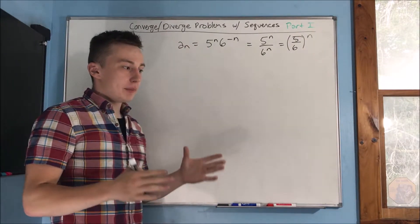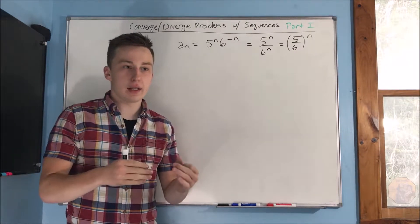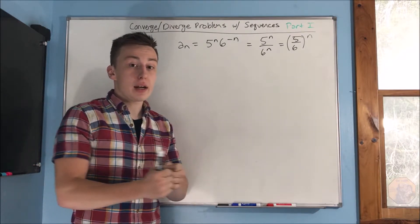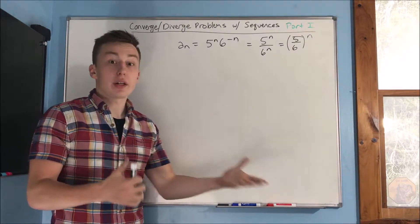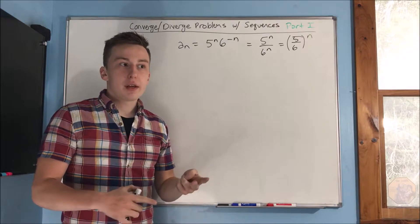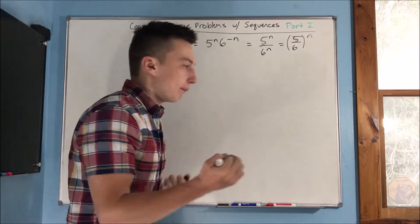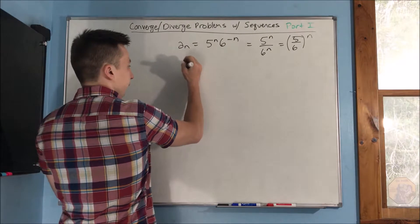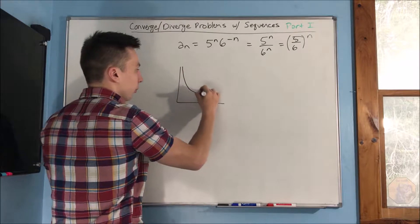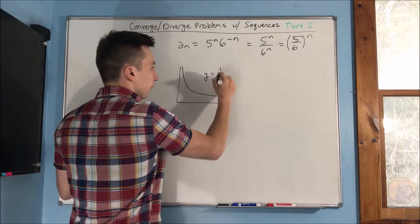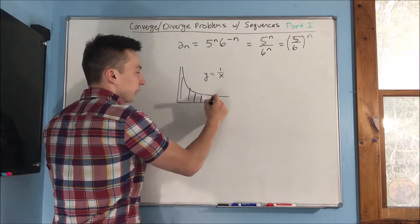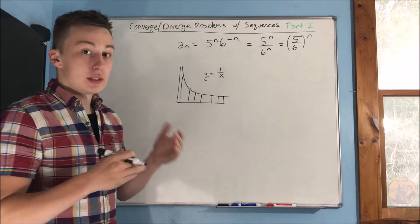Now, I'm going to take a little bit of time to just kind of hammer down the fact that this is different than improper integrals. Improper integrals, we were adding up all these different numbers. We were integrating. With sequences, if we're trying to figure out whether it converges or diverges, we're worried about the actual value itself. So if we have this graph, let's talk about 1 over x though. With improper integrals, we were trying to figure out whether this area was infinite or whether it was finite.